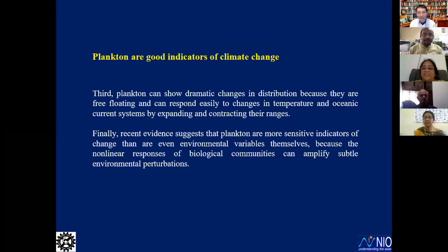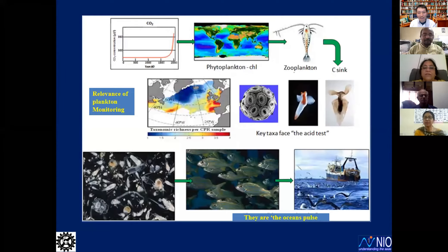Third, plankton can show dramatic changes in distribution because they are free-floating and can respond easily to changes in temperature and oceanic current systems by expanding and contracting their ranges. Fourth, recent evidence suggests that plankton are more sensitive indicators of change than even environmental variables themselves, because the non-linear response of biological communities can amplify subtle environmental perturbations.